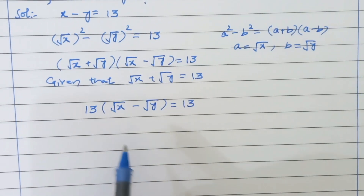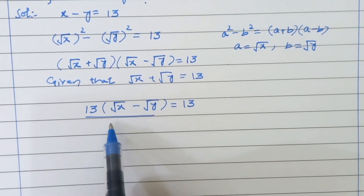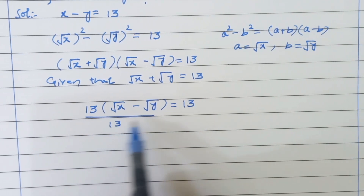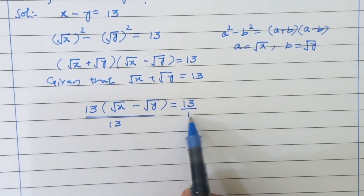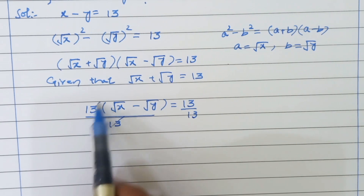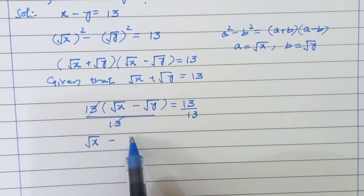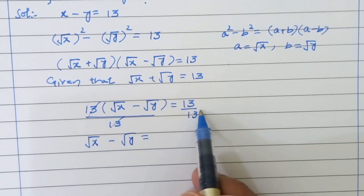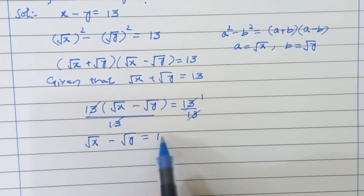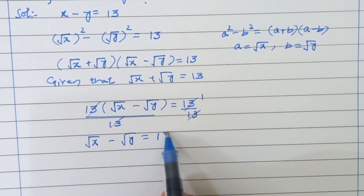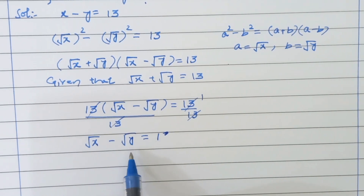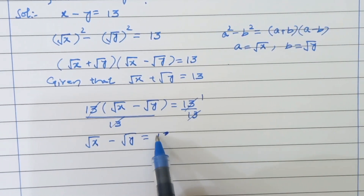Now, dividing both sides by 13 — dividing left-hand side by 13 and right-hand side by 13. This 13 cancels and we are left with root x minus root y equals 1.